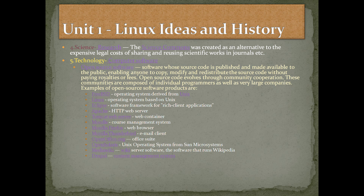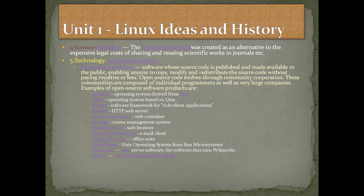Examples of open source software products are FreeBSD, an operating system derived from Unix — a Unix-based operating system just like Sun Solaris. Linux, a Linux operating system based on Unix. Eclipse, a software framework for rich client applications. Apache HTTP web server, and Tomcat web server, a web container.